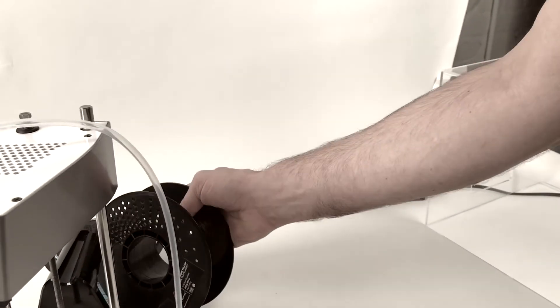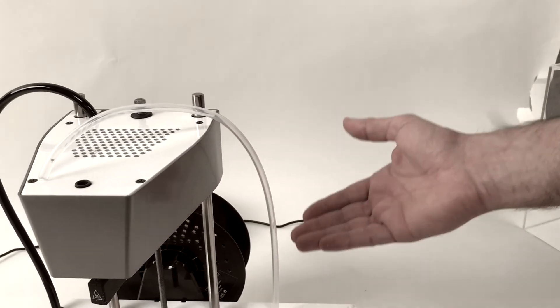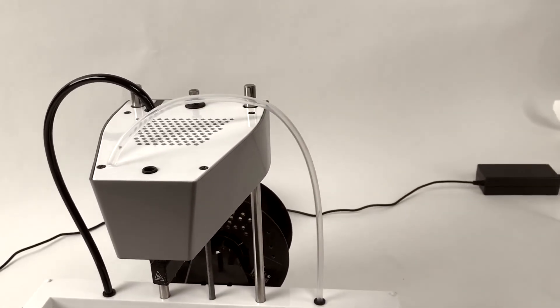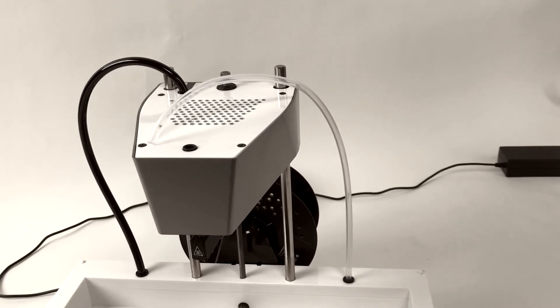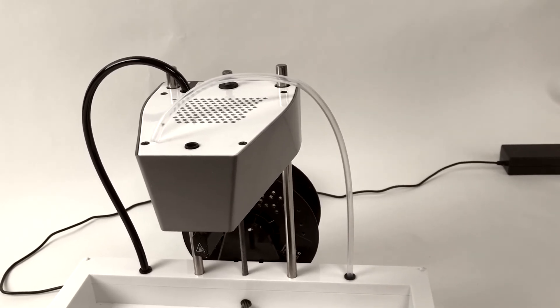Prepare the next spool by loading it through the clear tube, and then initiate another filament load, wait for the hot end to reach the proper temperature, and load the filament normally.